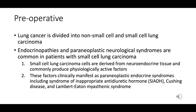Lung cancer is primarily classified into two categories: non-small-cell lung carcinoma and small-cell lung carcinoma, or SCLC. SCLC cells are derived from neuroendocrine tissue, enabling them to produce various hormones and physiologically active substances. The following are paraneoplastic endocrine syndromes associated with SCLC.